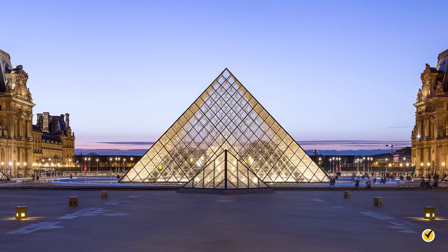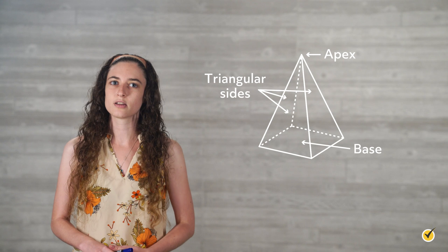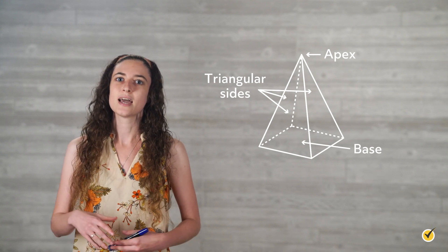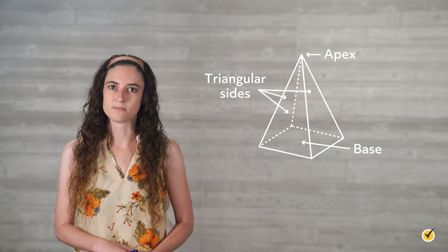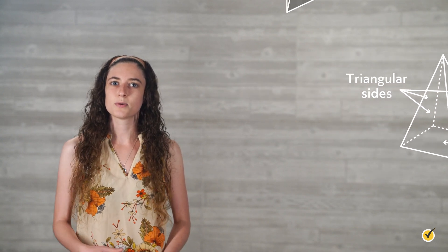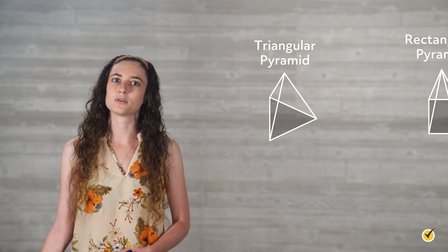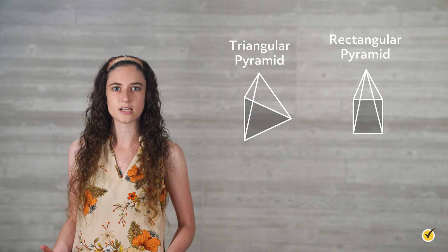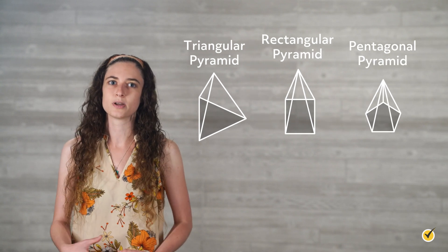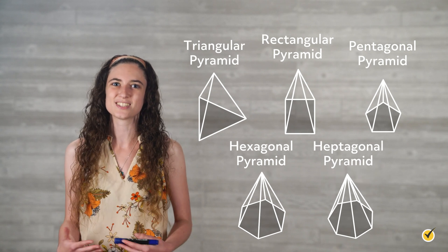As you can see from the images of the Egyptian pyramids, a pyramid is a three-dimensional figure with triangular sides that meet at the edges and at the top to form an apex, and it has a polygon as its base. The polygon base determines the type of pyramid. A pyramid with a triangle as its base is a triangular pyramid, with a rectangle is a rectangular pyramid, with a pentagon is a pentagonal pyramid. We also have hexagonal pyramids and heptagonal pyramids and so on.